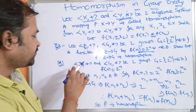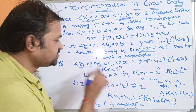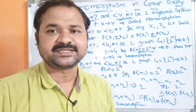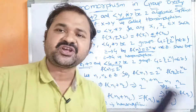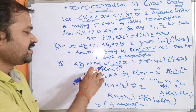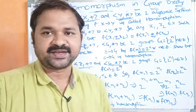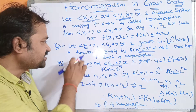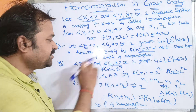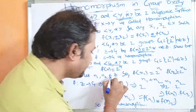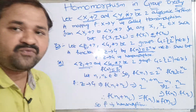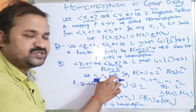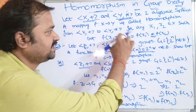Now the solution: two groups are given — (ℤ, +) is the first group, (G, ⋆) is the second group, and G = {2ⁿ | n ∈ ℤ}. The function is f(n) = 2ⁿ, which maps from ℤ to G. Let n₁, n₂ ∈ ℤ — we take two elements from group one's set, just as in the definition we took x₁, x₂ ∈ x.